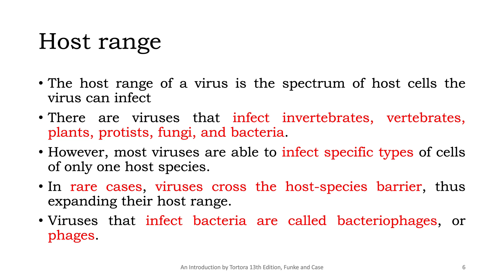Host range tells us which organisms or what spectrum of host cells a virus can infect. Viruses can infect invertebrates, vertebrates, plants, animals, protists, bacteria — almost everything. However, most viruses are very specific to the host species; a virus that infects a cat has very little chance of also attacking a dog. They do not cross the host species barrier, except for certain viruses that have gained this ability — one live example we are seeing today is COVID-19.